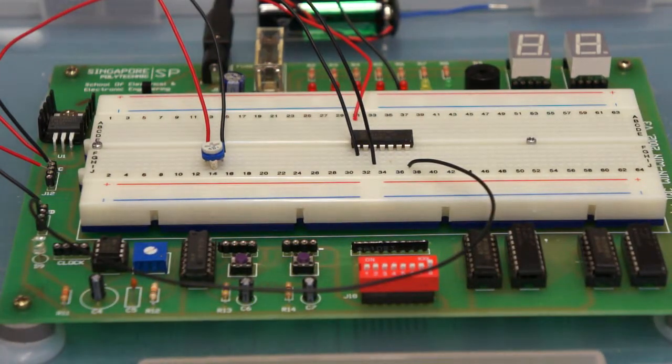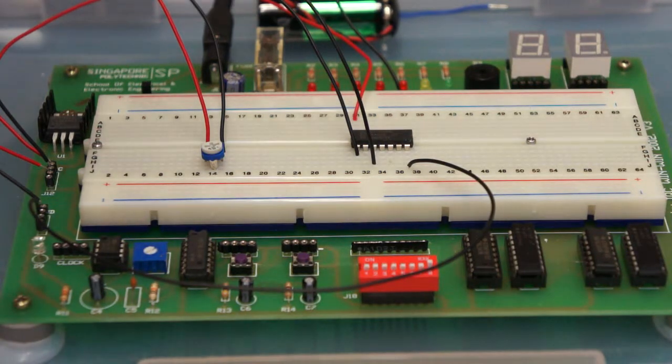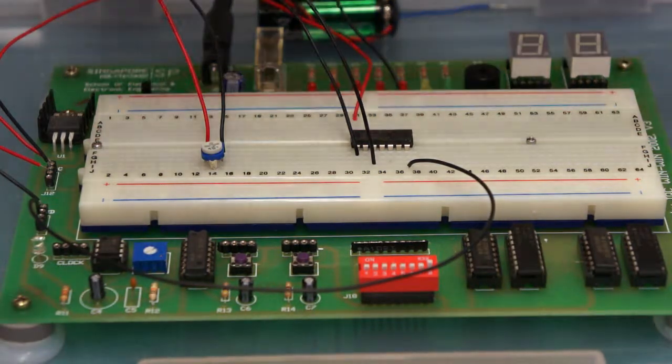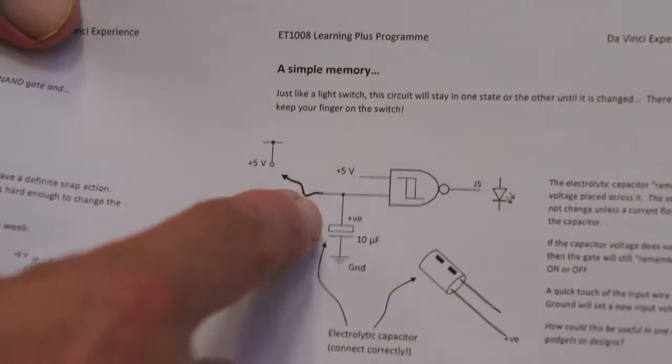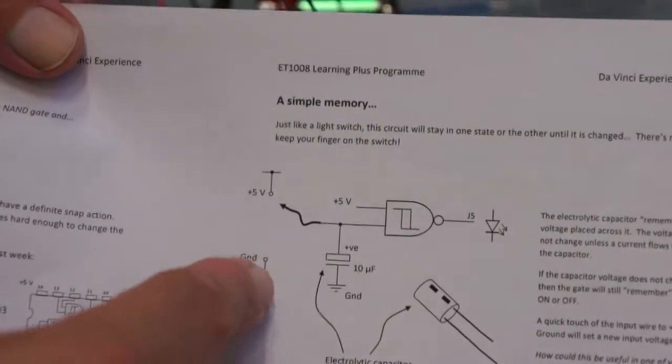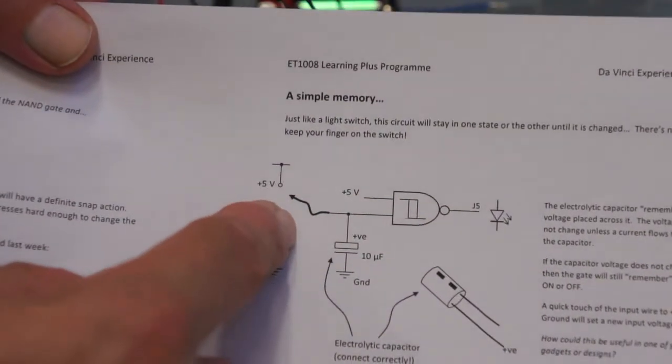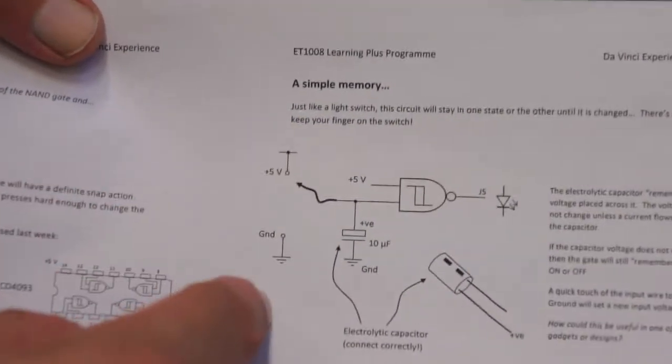Let's have a bit more fun with our Schmitt trigger gate. We're now going to do something a bit further on from just varying a resistor on the input. We are now going to go over here, take off the resistor, and instead just have a wire which can just go to plus five or ground.